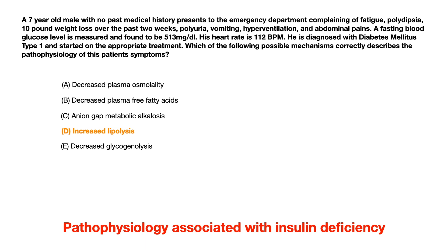What I want to do now is discuss why choice D is correct, and then we'll talk about test-taking strategies and how you might work backwards if you didn't know that choice D was correct. Choice D says increased lipolysis. In an insulin deficient state, the body increases lipolysis — it's lysing those fats. When it does this, it's mobilizing them, so it increases levels of plasma free fatty acids.